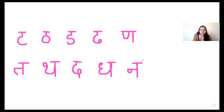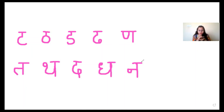Let me revise these letters once again. Touch your tongue on the top: Tha, Tha, Dha, Dha, Na. You can also keep your palm and feel whether you are saying soft or hard. Say Tha — Tha. When you are saying the letter hard, you are feeling the air on your palm. Say Tha, Tha, Dha, Dha, Na. Next line: Tha, Tha, Dha, Na.